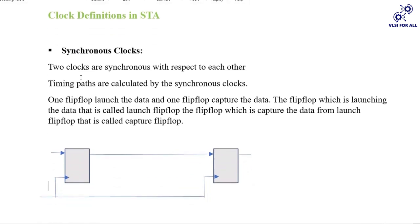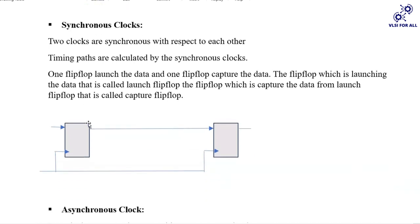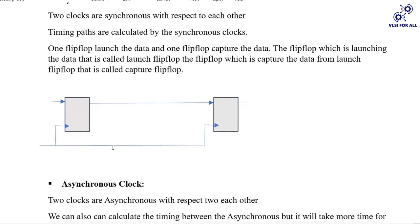Synchronous clock. Synchronous clocks are two clocks having the same clock period and only one clock source between them. Timing paths are calculated using the synchronous clock. Both clocks are connected to the same clock port source, so it is a synchronous clock and timing can be calculated easily.